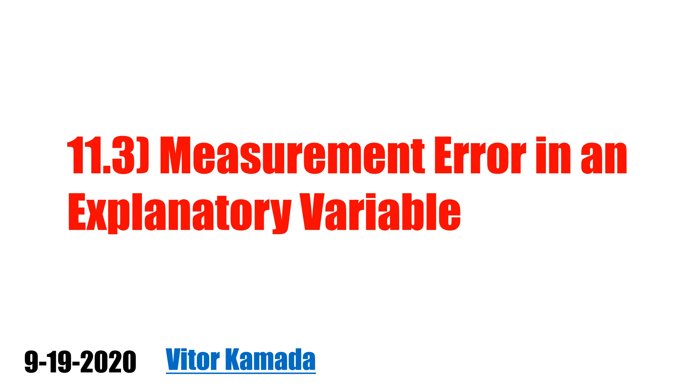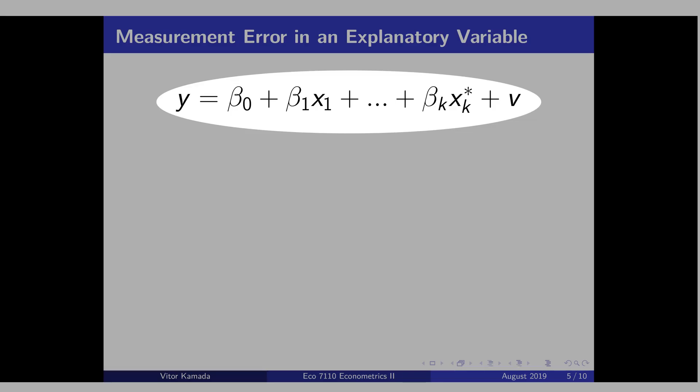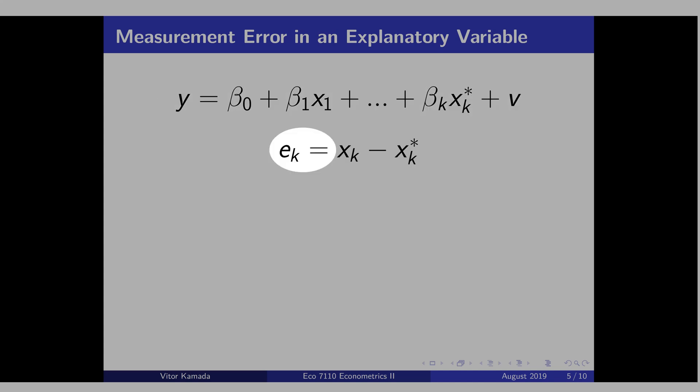In this video, let's see a special case of measurement error in an explanatory variable. Let's assume that this is the true model, or the structural model. ek is the measurement error. It's equal to xk, the observable variable, minus the real value of xk, or actual value of xk.